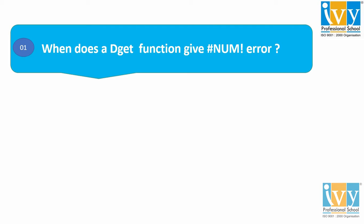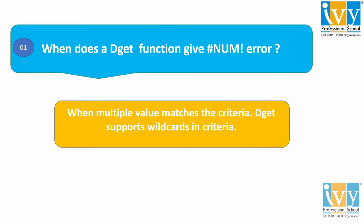When does a DGET function give a NUM error? As we all know, the DGET function is designed to extract a single value based on matching criteria. So when more than one record matches the criteria or condition that you specify, DGET will throw the NUM error.